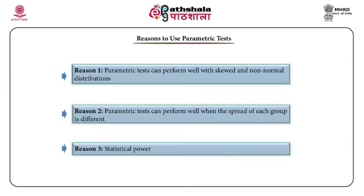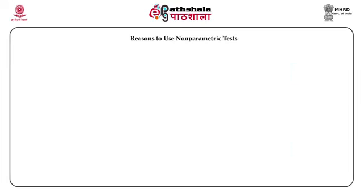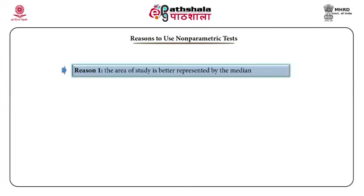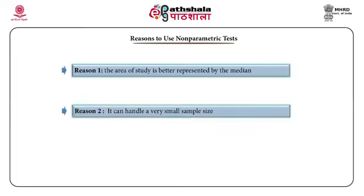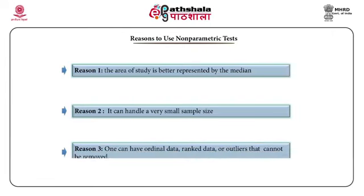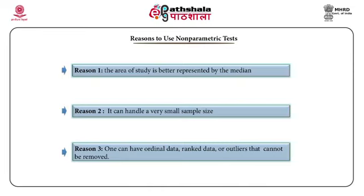Just like parametric, there are reasons to use non-parametric tests. First, the area of study under non-parametric tests is better represented by the median. Second, non-parametric tests can handle a very small sample size. Third, one can have ordinal data, ranked data, or outliers that cannot be removed. So in general, when there are chances of impurity in the distribution of the population or sample, and where extreme values are involved that cannot be easily replaced, we normally refer to non-parametric tests.